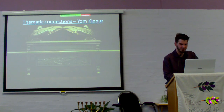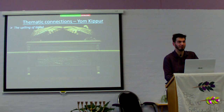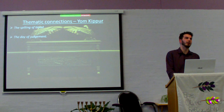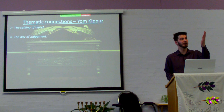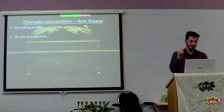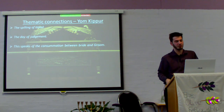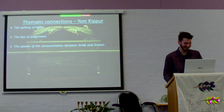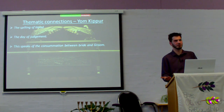Let's look at Yom Kippur. Spilling of blood occurred — lots of blood. It was the day of judgment, when your fate was sealed. Between Trumpets and Yom Kippur is your final window, then the books are sealed. I would say that this speaks of the consummation between bride and groom. Blood — what was supposed to happen when the bride and groom consummate?